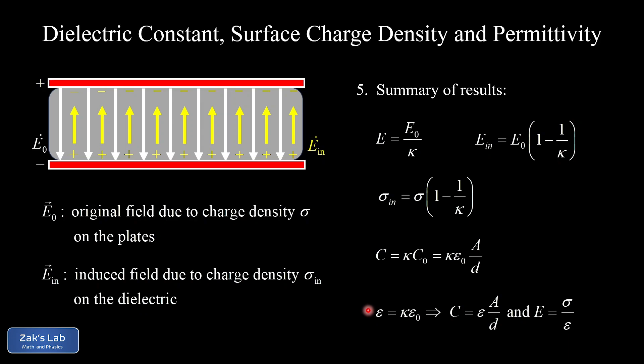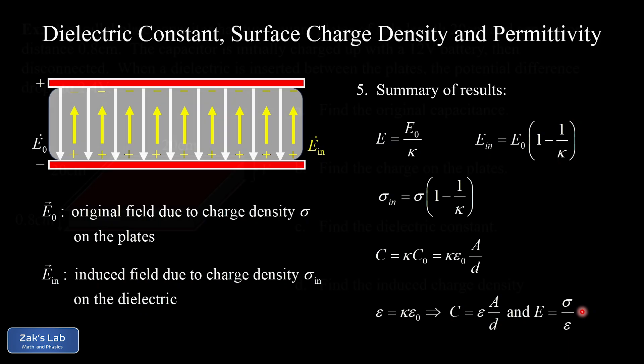This allows us to simplify the formulas, making them analogous to formulas previously found when there were no dielectrics present. The capacitance is given by epsilon A over d, and the electric field between the plates is given by sigma over epsilon, where sigma is the surface charge density on the original conductive capacitor plates and epsilon is the permittivity of the dielectric material.